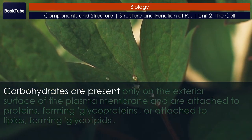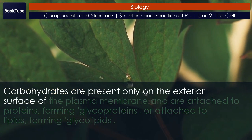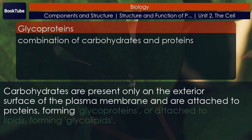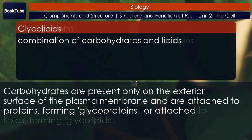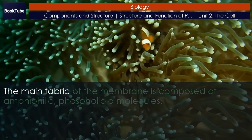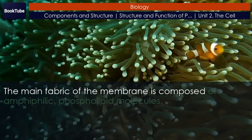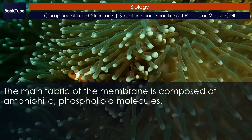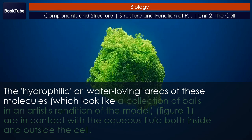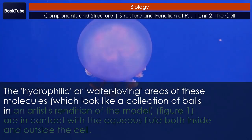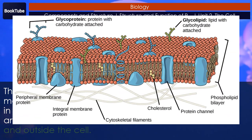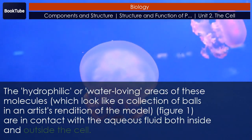Carbohydrates are present only on the exterior surface of the plasma membrane and are attached to proteins, forming glycoproteins, or attached to lipids, forming glycolipids. The main fabric of the membrane is composed of amphiphilic phospholipid molecules. The hydrophilic, or water-loving, areas of these molecules, which look like a collection of balls in an artist's rendition of the model, are in contact with the aqueous fluid both inside and outside the cell.